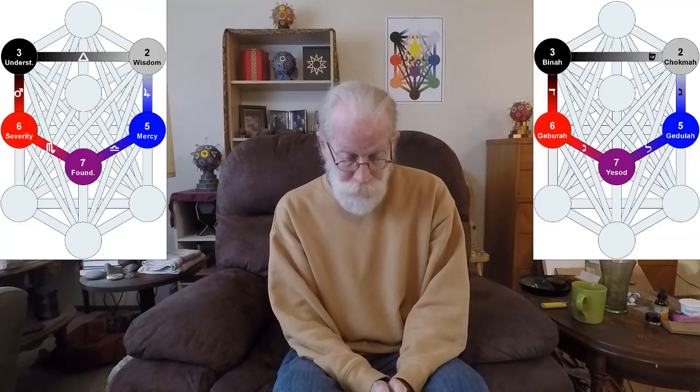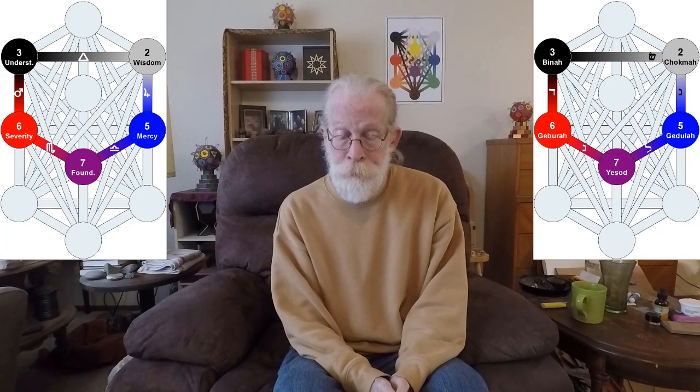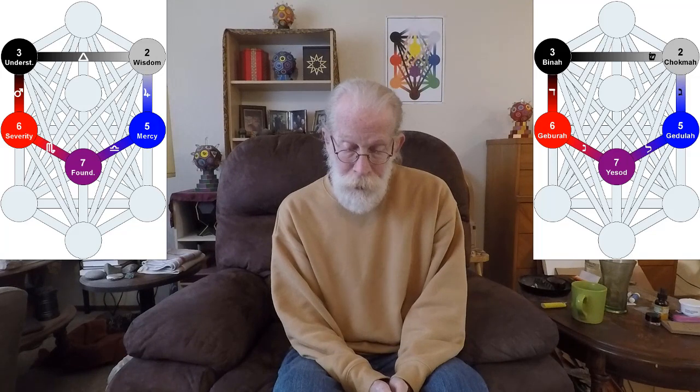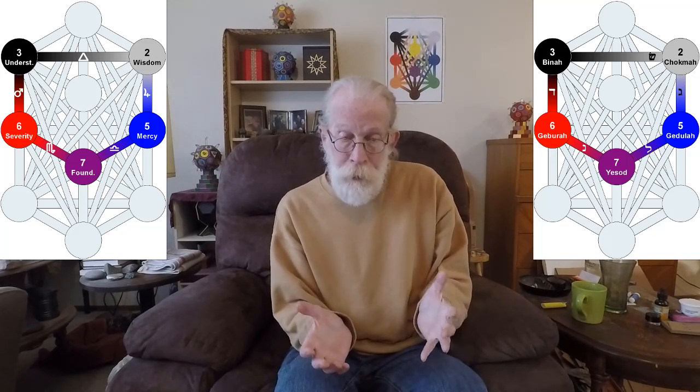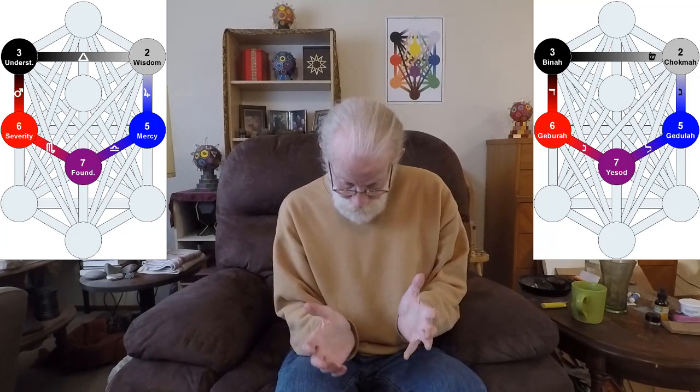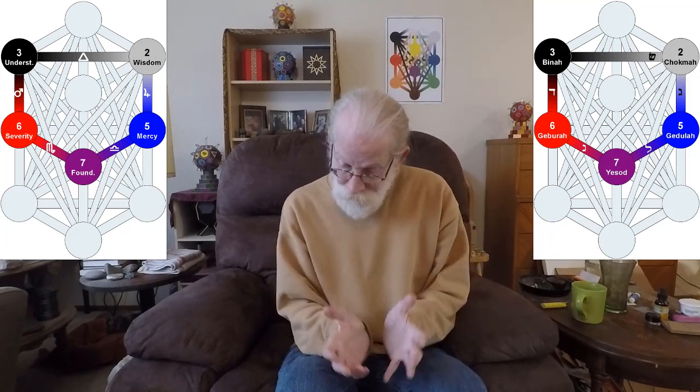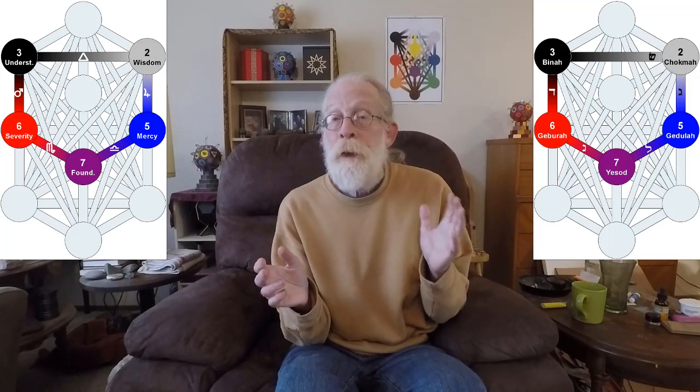Now, the first gate is a pentangular gate, gate number 50, and it integrates that dynamic, specifically Gedjula, Gebura, and Netzach, with Chokmah and Bina.